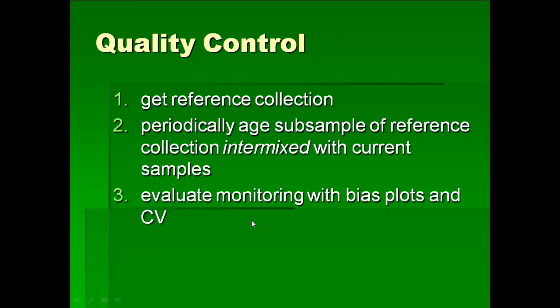For quality control, the best way is to take that reference collection and periodically age a subsample intermixed with your current samples. You don't want to announce that today is the day everyone gets tested on the reference collection — people will pay more attention and work harder. The best approach is to secretly slip in samples from your reference collection and see what age people assign. You then monitor using bias plots and the coefficient of variation to look at precision, and if they're known-age you can look at accuracy. That is the recommended strategy for any aging program.